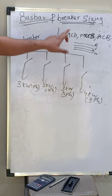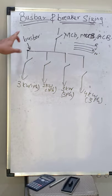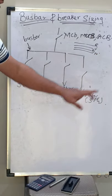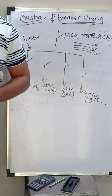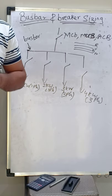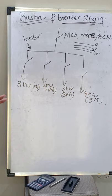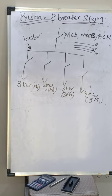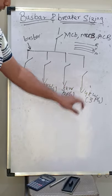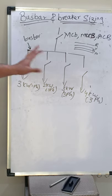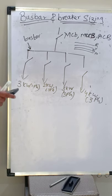Your breaker — it can be MCB, MCCB, or ACB. This is a bus bar, and this is a load connected to the bus bar. A bus bar is nothing but a conductor material; it can be copper, aluminium, or steel. The role of a bus bar is generally used for distribution purposes. In this single line diagram, the loads connected are 3 kilowatt, 2 kilowatt, 3 kilowatt, and 4 kilowatt.